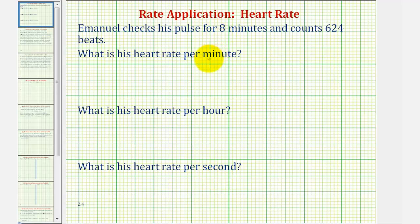So we're given a rate and asked to find several unit rates. Notice how the given rate would be 624 beats per eight minutes, which we can write in fraction form: 624 beats over eight minutes.